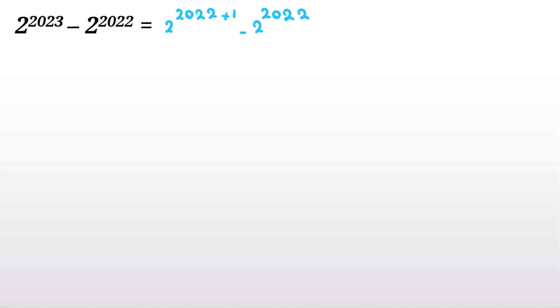The next step, we consider a to the m plus n equal to a to the m times a to the n. So we can write the first one as 2 to the 2022 times 2 to the 1 minus 2 to the 2022. Now, if we factor out 2 to the 2022 times 2 to the power of 1 minus 1, which is 1, it will be 2 to the power of 2022.